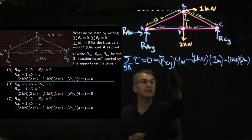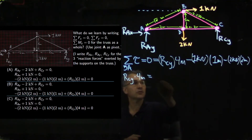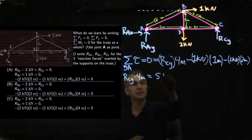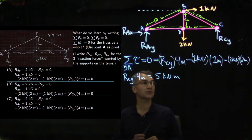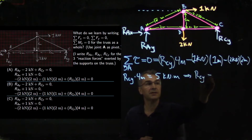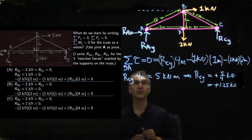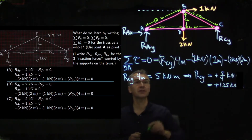Everything is known except R-C-Y. Solving: R-C-Y times 4 meters equals 1 times 1 plus 2 times 2, which is five kilonewton-meters. That gives R-C-Y equals 5/4 = 1.25 kilonewtons. Next, we can write sum of forces in X equals zero. The torque equation was done first because it gives an equation with only one unknown.